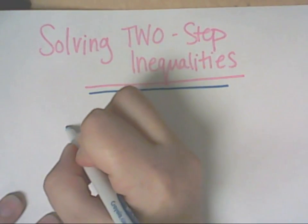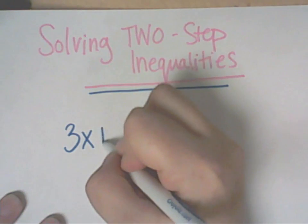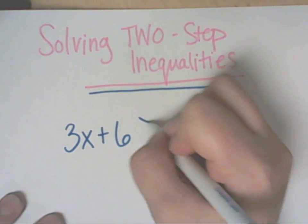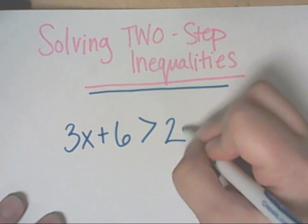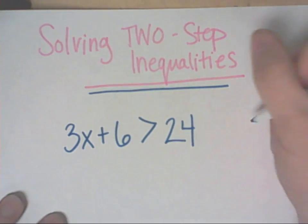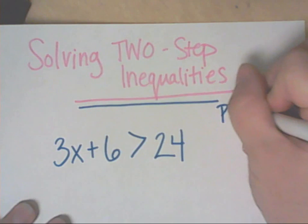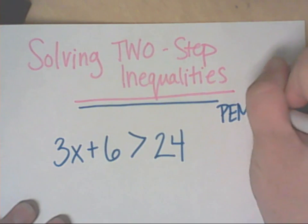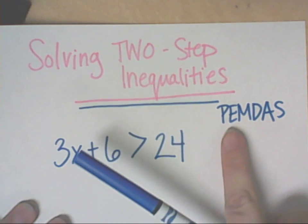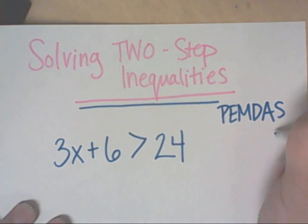Alright, so we're going to use a system that you already know. We can use this on two-step equations or two-step inequalities. It's the same process. What we're going to do is actually do something that you've learned before, PEMDAS. The only exception is that we are actually going to do PEMDAS backwards.